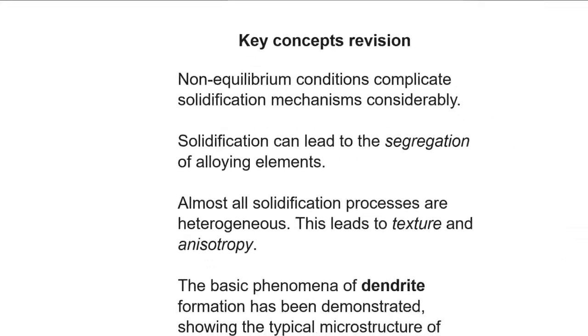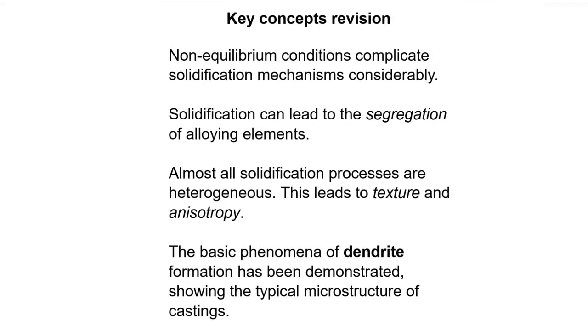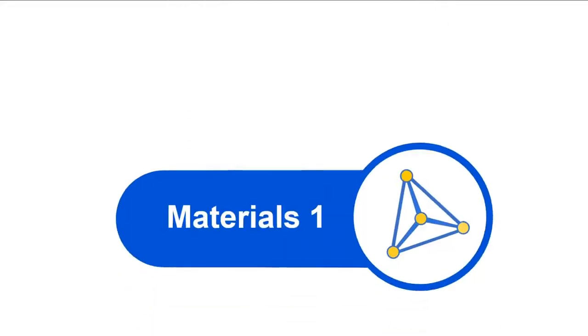So there you have it. Solidification is a fairly complicated process, but we've worked our way through it systematically. We've covered the phenomena of segregation, and just witnessed it occur in a dendritic microstructure, which most cast metals exhibit. Segregation and directional solidification can have a big impact on how uniform the properties are throughout a material, imparting greater anisotropy. There are routes to reversing or eliminating these often deleterious effects, which we'll cover when we discuss heat treatments. Until next time.